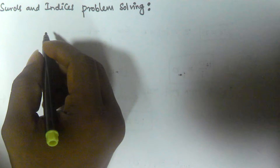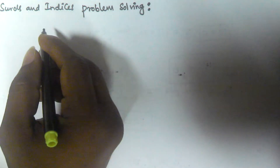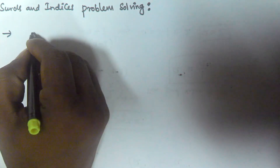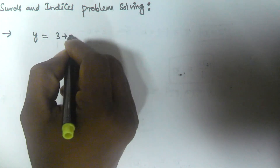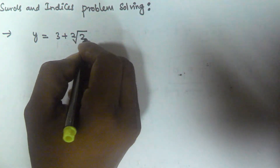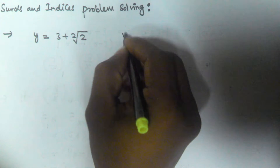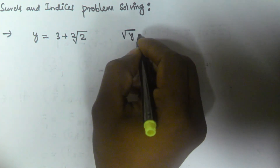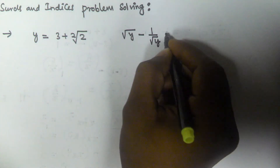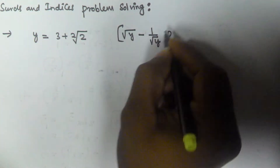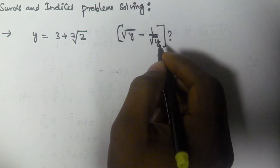Hello friends, in this video we will see a problem related to surds and indices. We have given y is equal to 3 plus 2 root 2, and we have to find the value of root y minus 1 by root y.